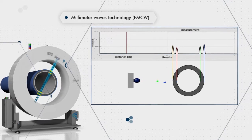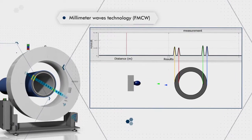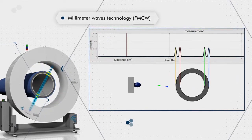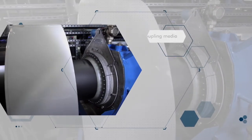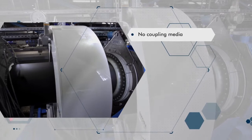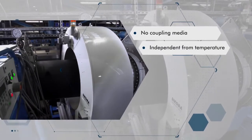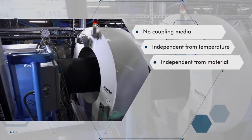From the runtime difference of the reflected signals, the product dimensions are defined. The non-contact millimeter wave technology is reliable, without water as coupling media. Temperatures of the melt and material types of the pipe do not affect the measurement.